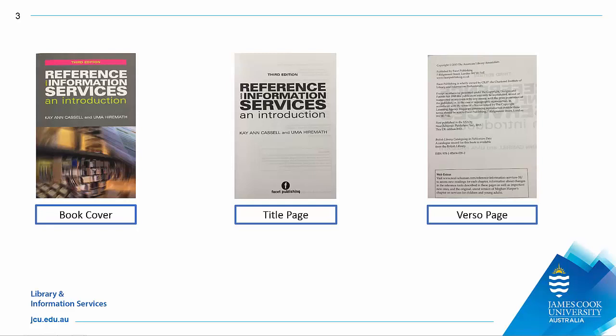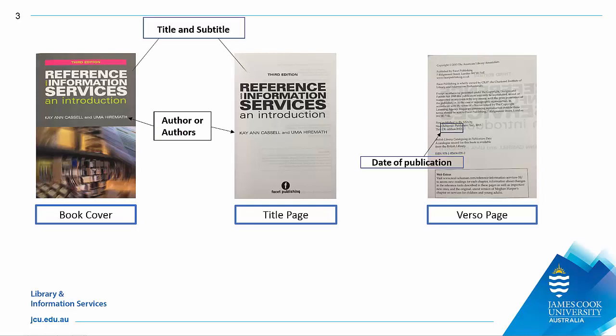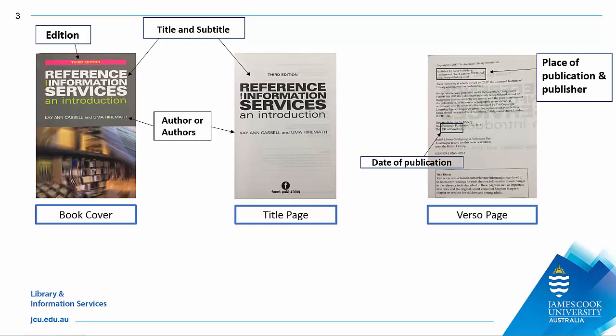When you reference a book with authors, you need the following information: the author or authors, the date of publication, the title and subtitle of the book, the edition number unless it is a first edition, and the place of publication and the name of the publisher.